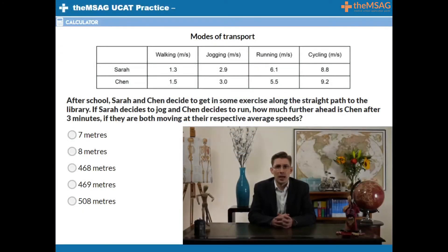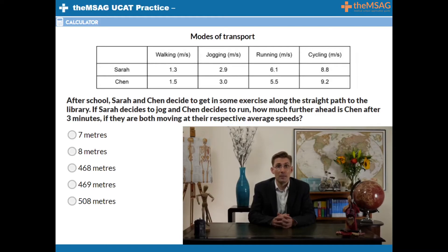Take a look at the table on the screen. It gives you information about the average walking, jogging, running and cycling speeds of Sarah and Chen. The units are meters per second.